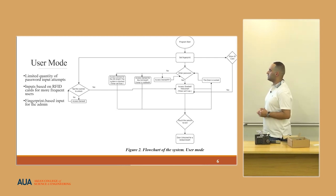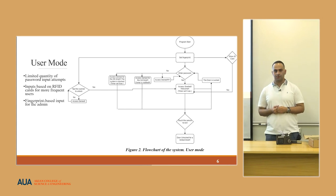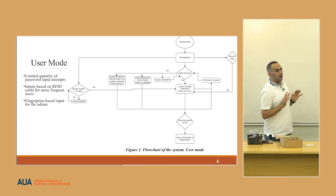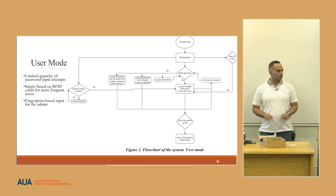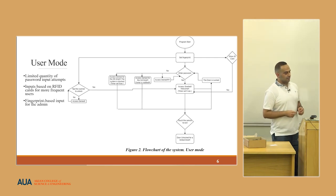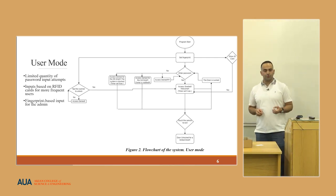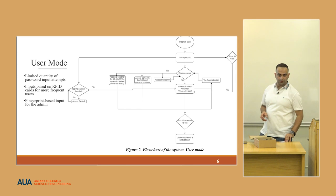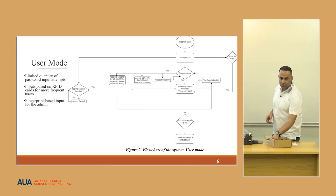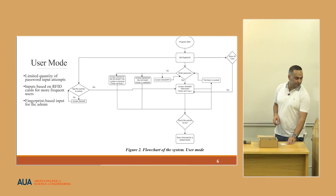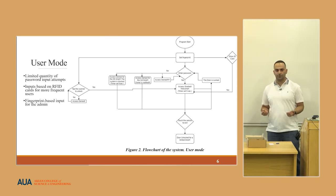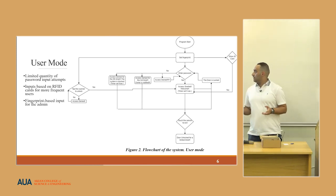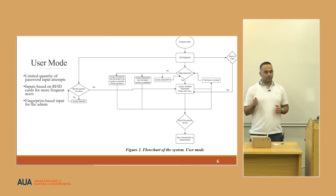In case of three wrong attempts, the owner gets a notification on their device. In case of a fifth failure, the owner gets a call. For RFID scanners, used for more common users, all you have to do is show the card or chip in front of the scanner to get access. The fingerprint is VIP — it's only for the owner; the admin can only register one fingerprint.